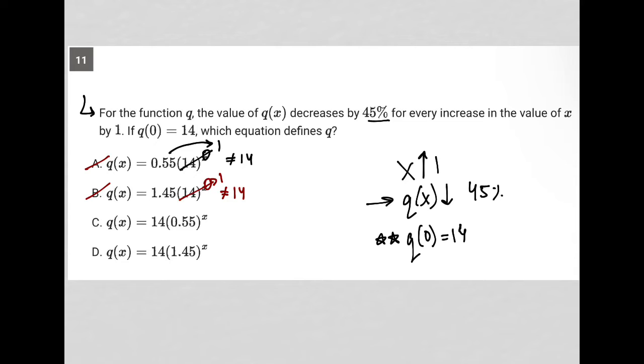But looks like choices C and D would give me the 14 that I want, because this becomes 1. 14 times 1 works - same thing. So C and D are good answers. Let me just erase this for now. All right, so the next thing I'm going to do is use this idea.